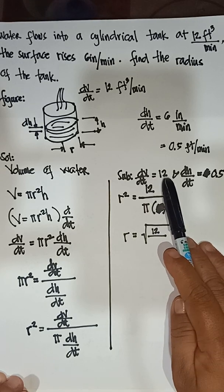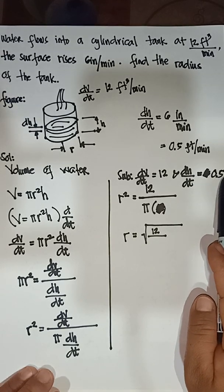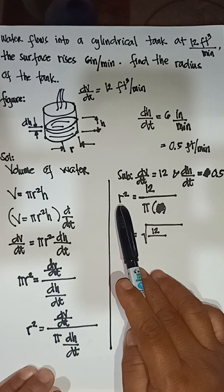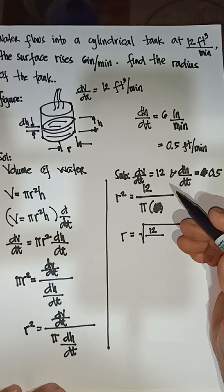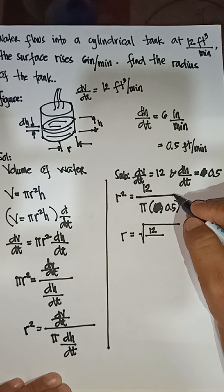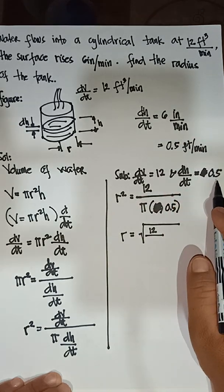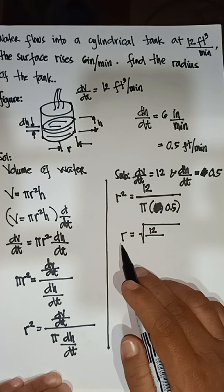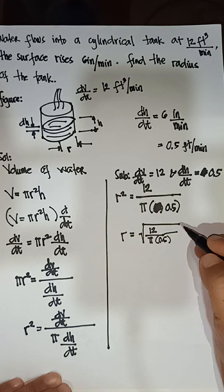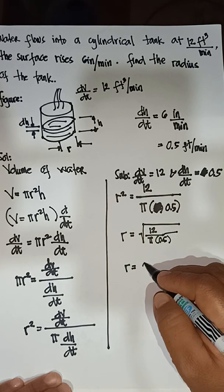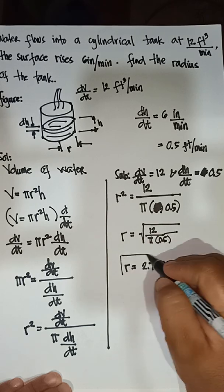Substituting the given values: dV/dt is equal to 12 cubic feet per minute and dh/dt is equal to 0.5 feet per minute. So r² equals 12 divided by (π times 0.5). Taking the square root, the radius is approximately 2.76 feet. Remember to be consistent with units.